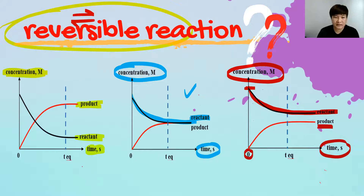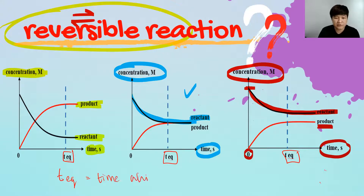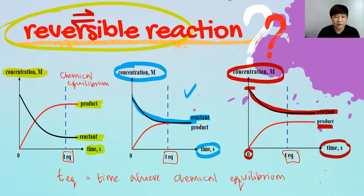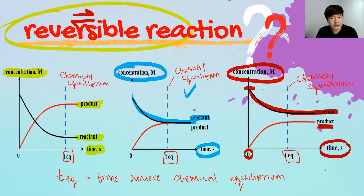In all of these curves, there is one more important feature: the T-equilibrium. The T at equilibrium is the time at which chemical equilibrium is achieved. How do you identify it? Your chemical equilibrium is achieved when the curve for the product and the curve for the reactant start to go flat.